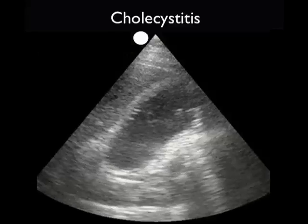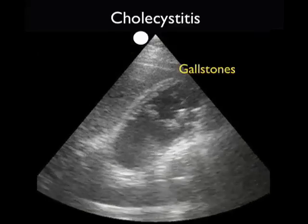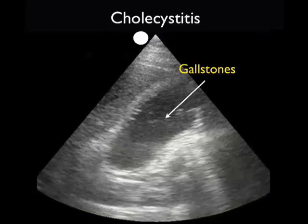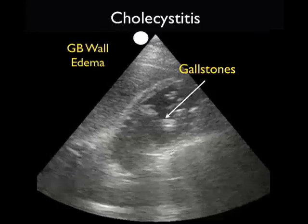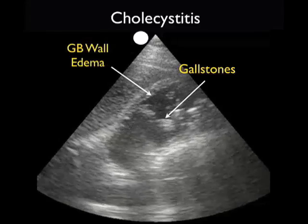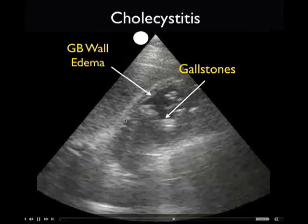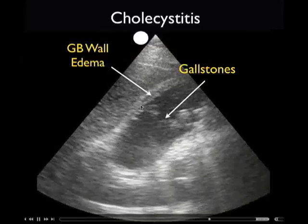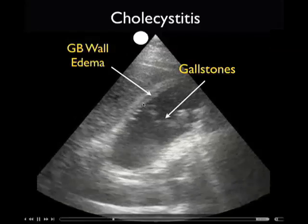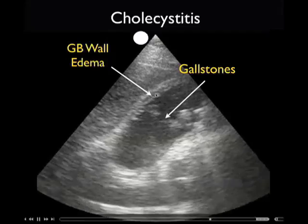This video clip shows another finding of acute cholecystitis. In addition to the multiple gallstones that we see within the gallbladder lumen, we appreciate a thickened anterior gallbladder wall. And within the wall of the gallbladder, we see a stripe of black fluid consistent with gallbladder wall edema. Here with the small indicator arrow, I'm going to trace out that area of gallbladder wall edema within that anterior wall of the gallbladder.